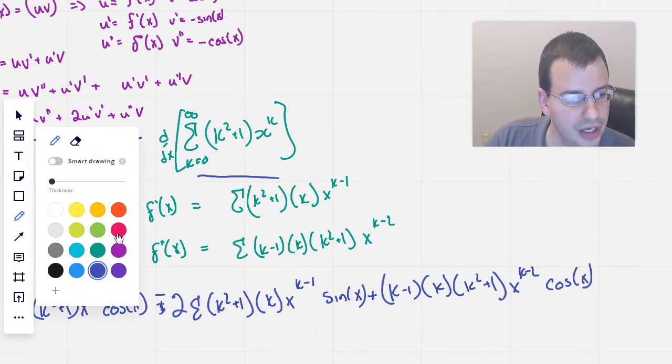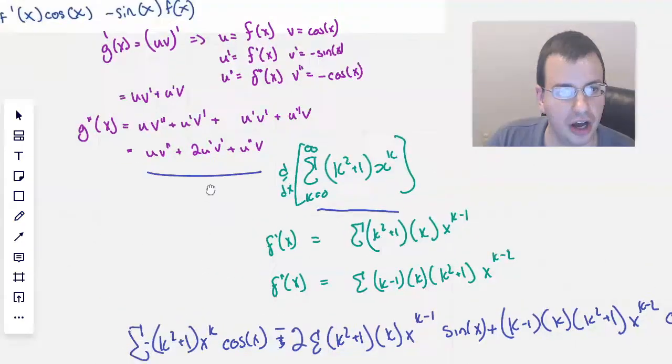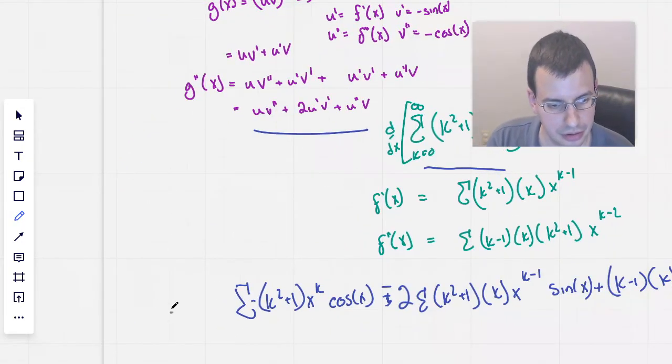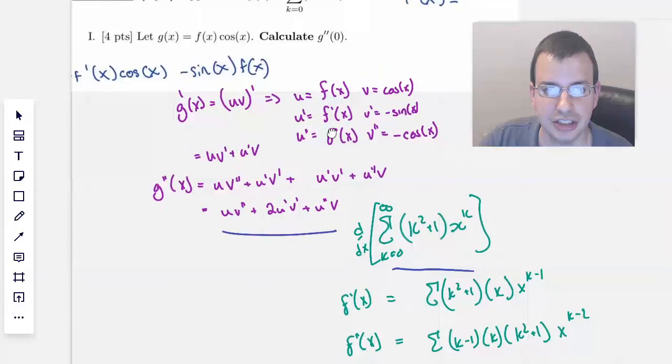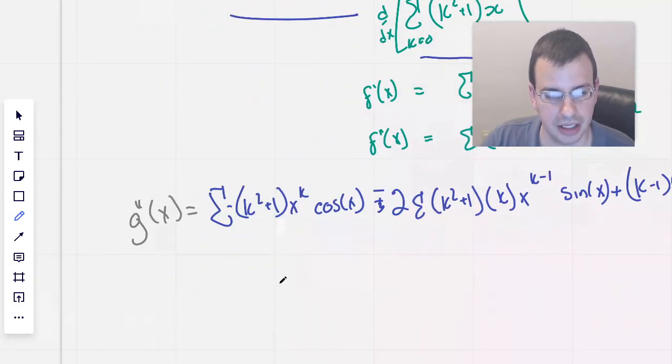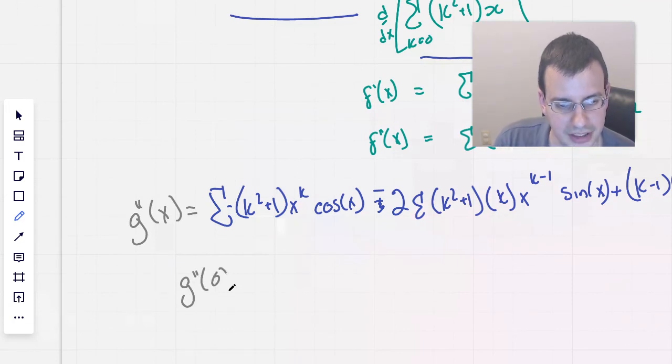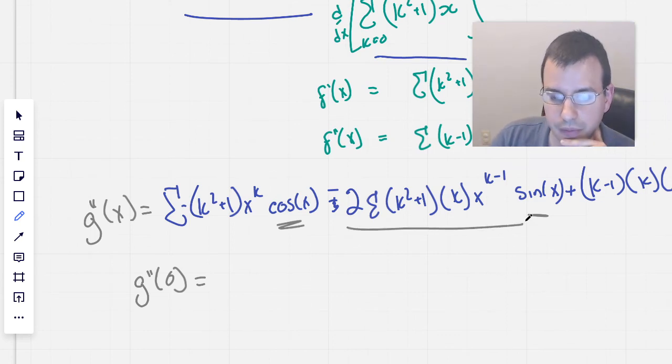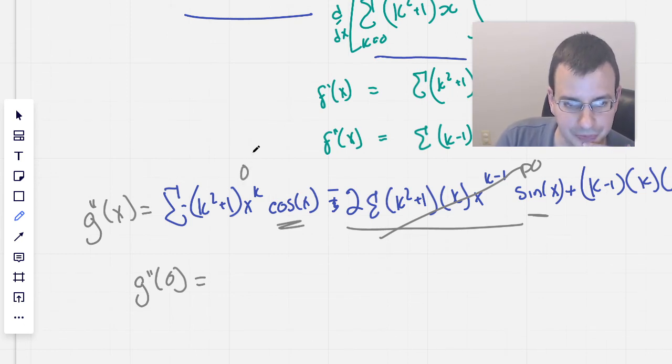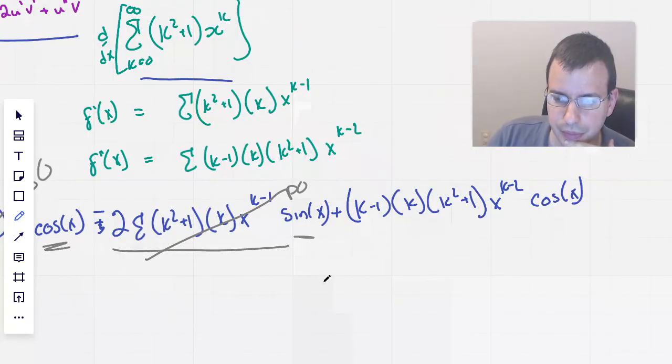So, what we're going to do then is we're going to plug in the value of 0. g double prime of x equals, we're going to plug in 0. So plugging in 0, we have g double prime of 0 equals. So if we look at this, cosine of 0 will be 1. This will be 0 because we have sine of 0. So that goes away. And then we have 0 to the k, which is going to be 0. That is going to be 0. This one's going to go to 0, too.